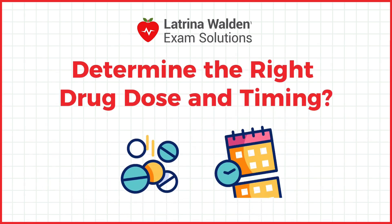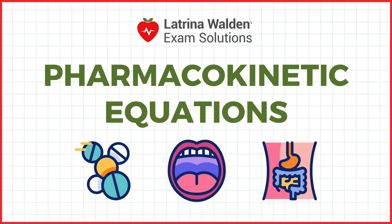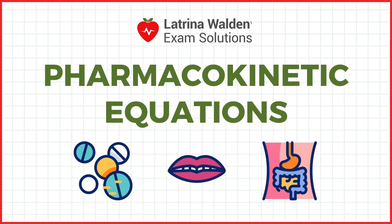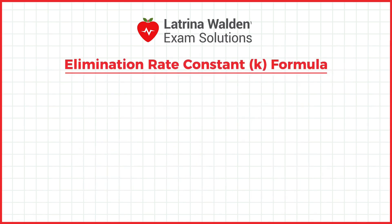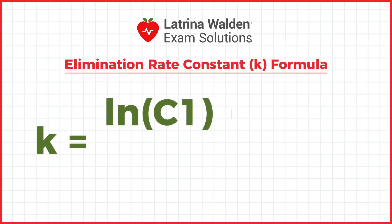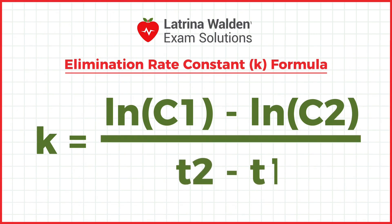Ever wondered how healthcare providers determine the right drug dose and timing? Pharmacokinetic equations reveal how drugs move through the body, ensuring safe and effective dosing. The elimination rate constant formula is calculated using the equation K equals the natural logarithm of C1 minus the natural logarithm of C2, all divided by T2 minus T1, where C1 and C2 are the drug concentrations at times T1 and T2.